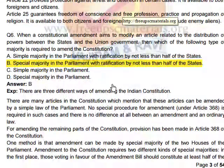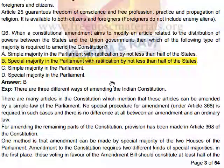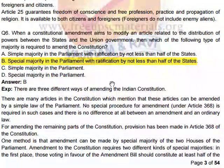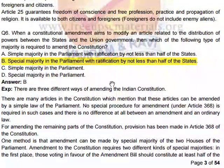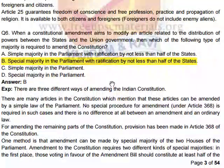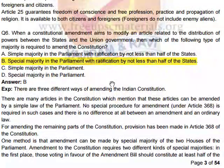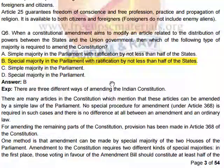When a constitutional amendment aims to modify an article related to the distribution of powers between the center, states, and union government, which type of majority is required? The answer is a special majority in Parliament with ratification by not less than half of the states.